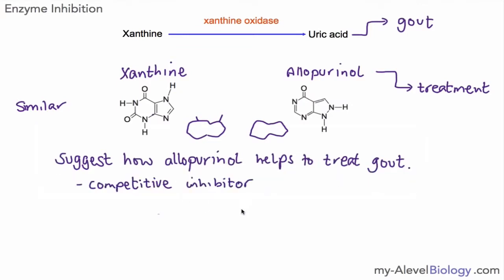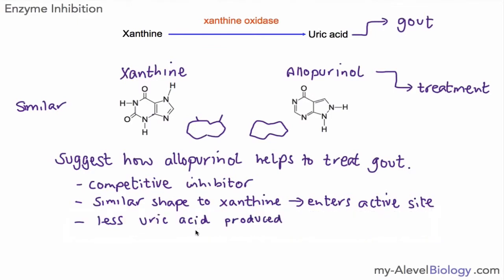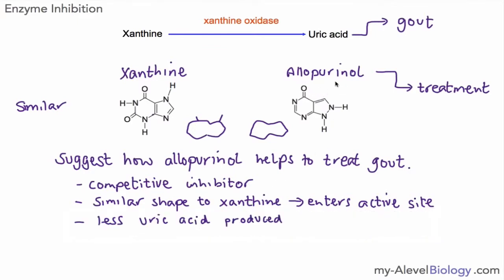So how does allopurinol help treat gout? The first point is that it is a competitive inhibitor, because the shapes are similar. You would say its shape is similar to xanthine, it enters the active site of xanthine oxidase, and therefore less uric acid is produced. It's important to say less uric acid is produced — not no uric acid — because the inhibitor slows the rate of the reaction, it doesn't stop it completely. That distinction is very important to emphasize in an exam answer.